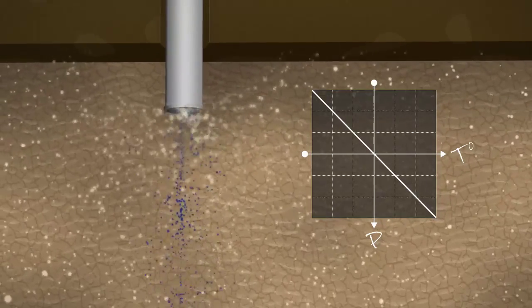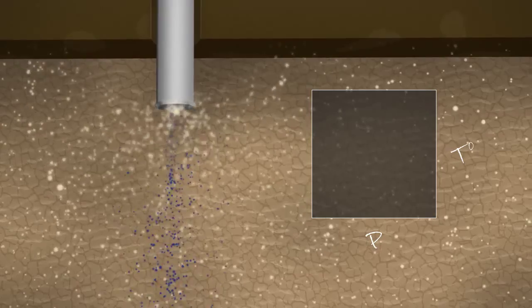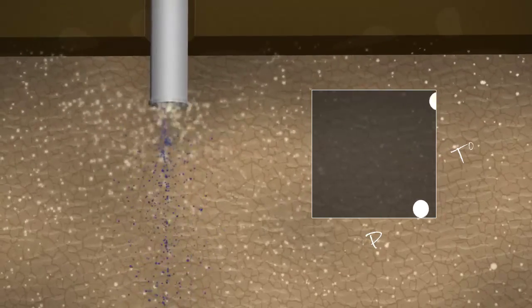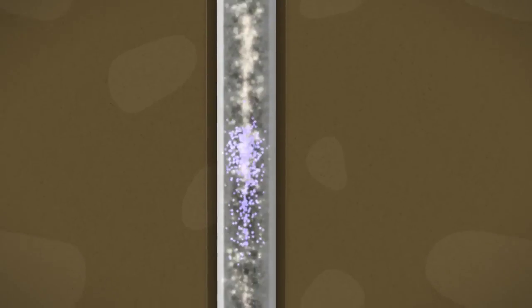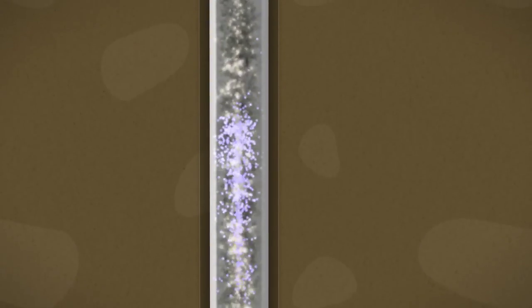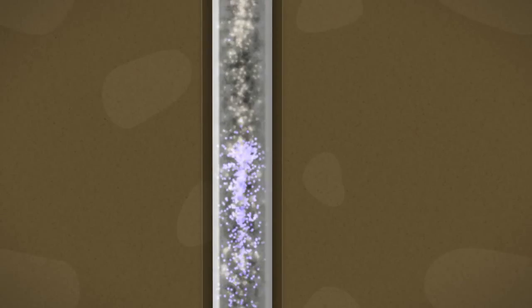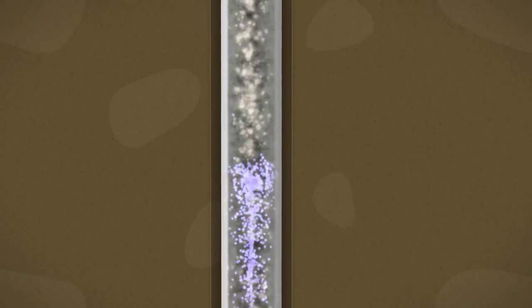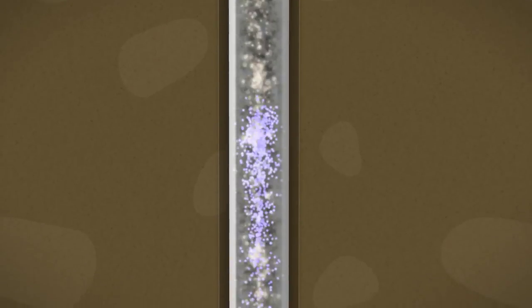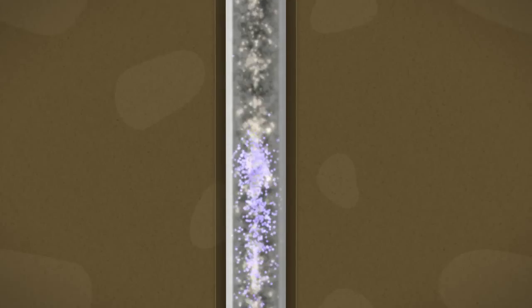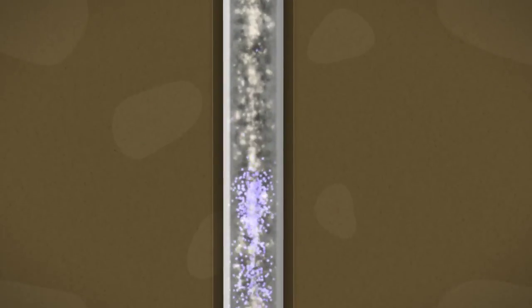This change in temperature and pressure creates condensation from the water vapor of the gas. This same principle applies when gas travels upwards to the surface installation. As the gas travels upwards, it starts to expand and the pressure drops as well as the temperature, causing even more water to form. The speed with which the gas travels is too low to drag the water up to the surface, so it falls back down to the inlet of the well.